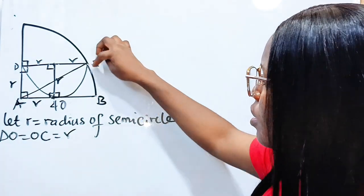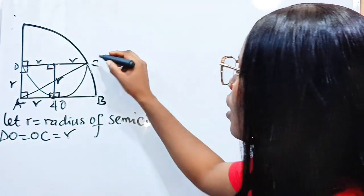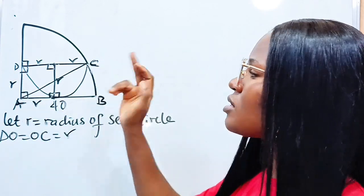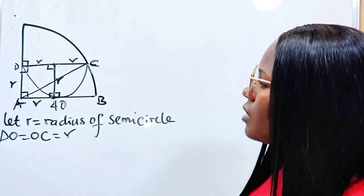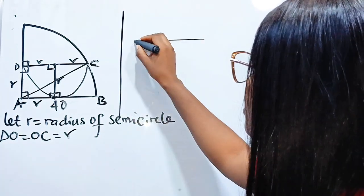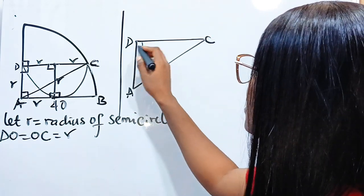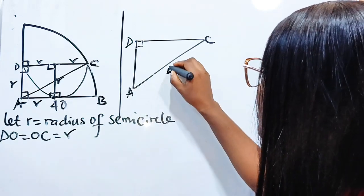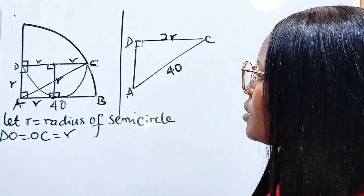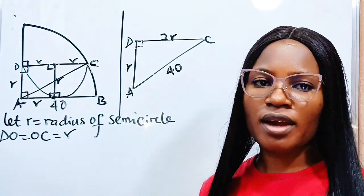Remember that AB, being the radius of this quadrant, is 40, and AC is also 40 because AC is also the radius of this quadrant. Now we are going to consider triangle ADC. This is 90 degrees, AC is 40 (the radius of the quadrant), here is r, and r plus r is 2r. This place is r as well. Remember we're asked to find the area of the semicircle, and once you're able to get the radius, we get the area.